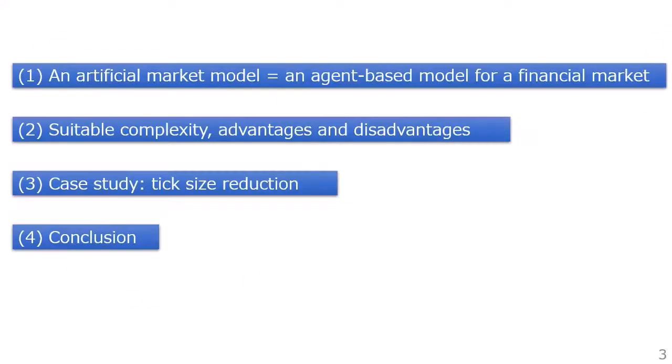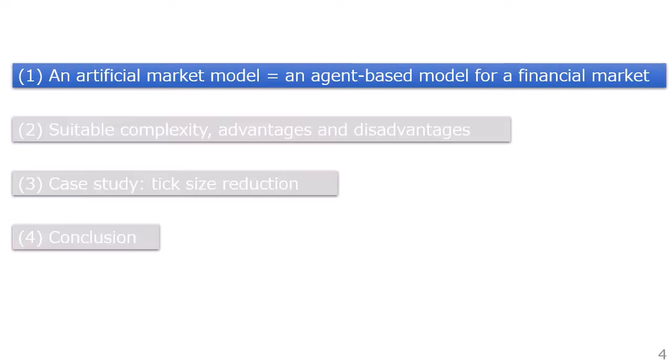This is the table of contents for today's talk. First, I will explain what is an artificial market model — an agent-based model for a financial market.